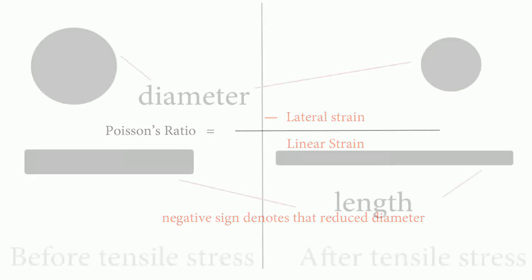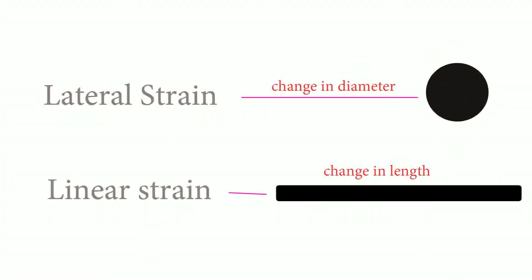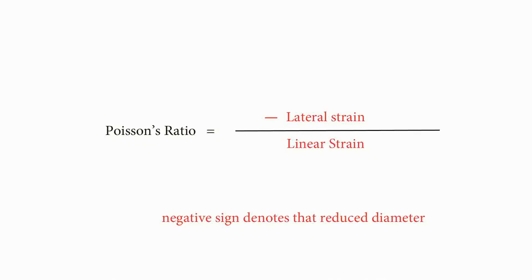As an example, we consider a material which has length and diameter. Now we apply tensile stress to this element, and the change in length is the linear strain and the change in diameter is the lateral strain. By dividing the lateral and linear strain, we can get the Poisson's ratio.